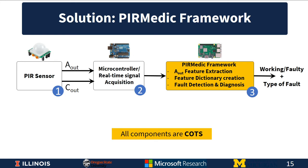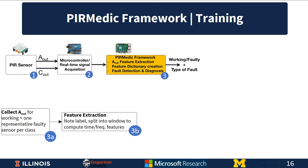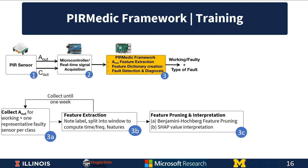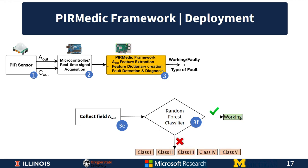In the training phase, we collect analog output for a working sensor and one faulty representative sensor per class, extract features by splitting into time windows and computing time and frequency features, repeated over a duration such as one week. We then perform feature pruning and interpretation using the Benjamini-Hochberg feature pruning and SHAP value interpretation — details in our paper — to create the feature dictionary stored on a Raspberry Pi. In deployment, we collect field analog output and send it to a random forest classifier, which determines whether the sensor is working or faulty along with the class of fault.